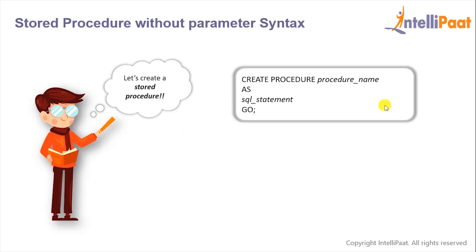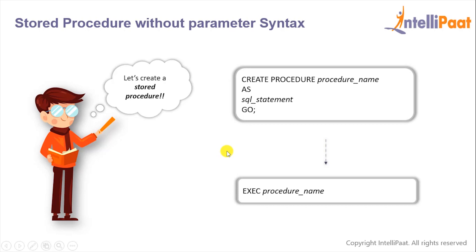Now let's have a look at the syntax of the stored procedure. We'll give the keyword CREATE PROCEDURE and then give the procedure name. After that we'll give the keyword AS and then give the SQL statement for which we need to create the procedure, and we'll end the procedure with the GO keyword. After we create a procedure we need to execute it — we type EXEC and then give the name of the procedure to be executed.